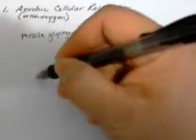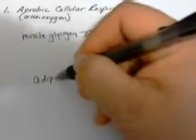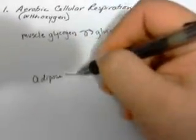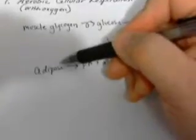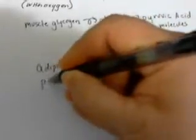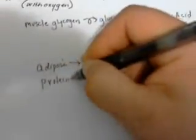If muscle glycogen is not available, adipose cells are broken down into fatty acid and glycerol. If you recall, adipose cells are triglycerides. Any proteins are then broken down into amino acids.